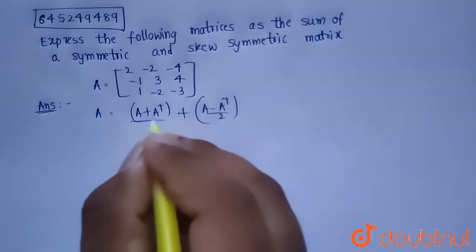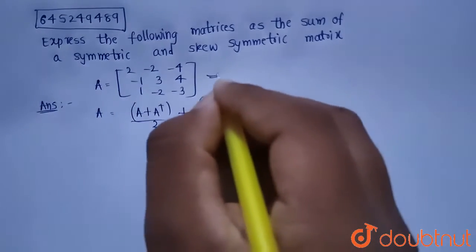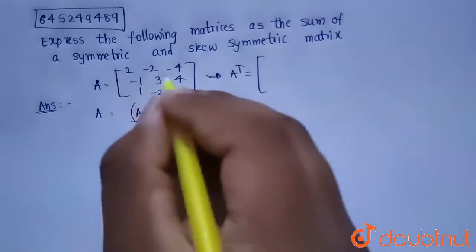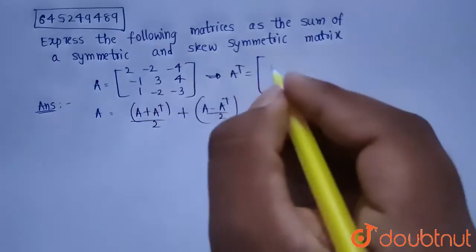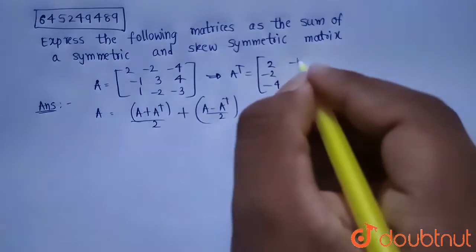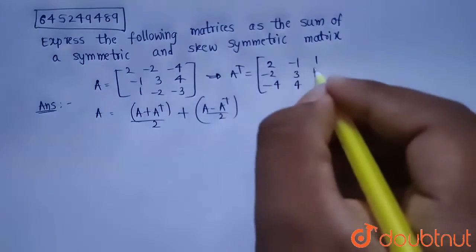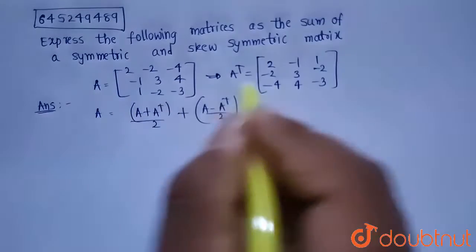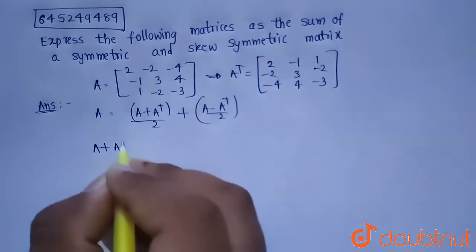In order to find these two parts, we first need to find A transpose. A transpose is obtained by converting the row elements of A into column elements — the first row becomes the first column, the second row becomes the second column, and the third row becomes the third column.